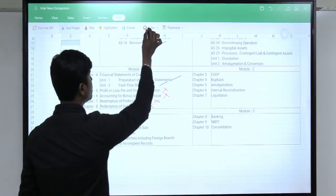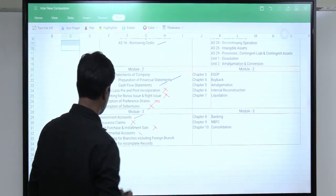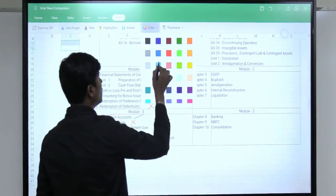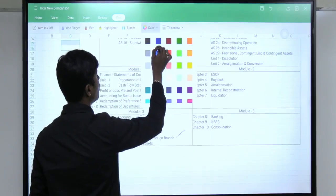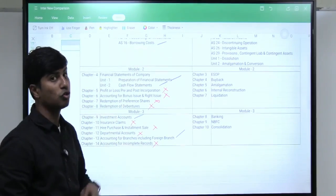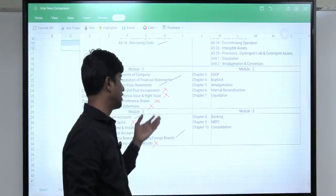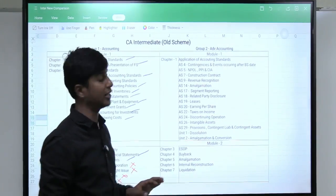Under advanced accounting, insurance claim, hire purchase, as well as departmental accounting is removed. Branch accounting survives, you would have to still learn it in advanced accounting and incomplete records is now pushed to CA foundation. So these are the topics what would be required to be read under the new scheme and certain topics what I marked it with red are the topics which are not required to be read under new scheme.